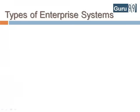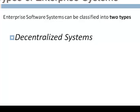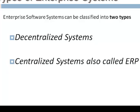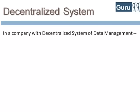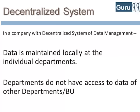Based on the manner in which communication and data exchange is managed, enterprise software systems can be broadly classified as decentralized systems or centralized systems, which are also called ERP. Let's look at decentralized systems first. In a company with a decentralized system of data management, data is maintained locally at the individual departments. Departments do not have access to information or data of other departments.